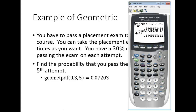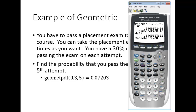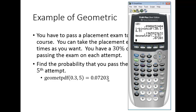On the calculator: second, distributions, select geometPDF. Enter 0.3 for the probability of success and 5 for the trial number. The result is exactly 0.07203. That's an exact answer, so we use an equals sign rather than approximately.